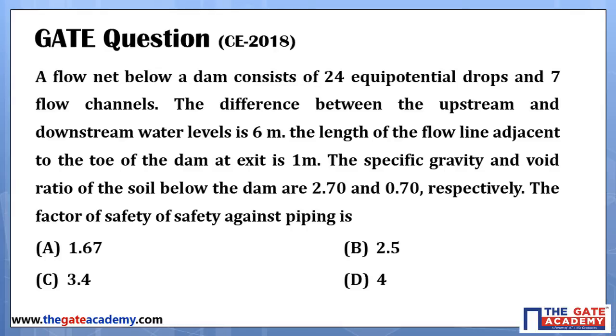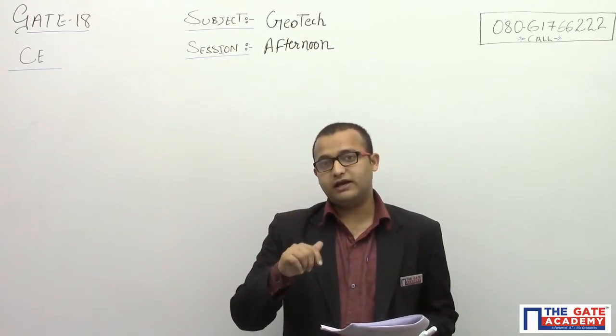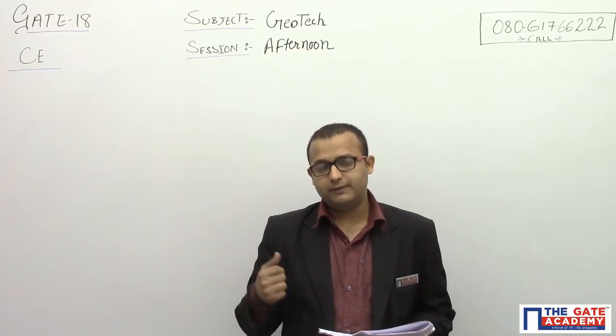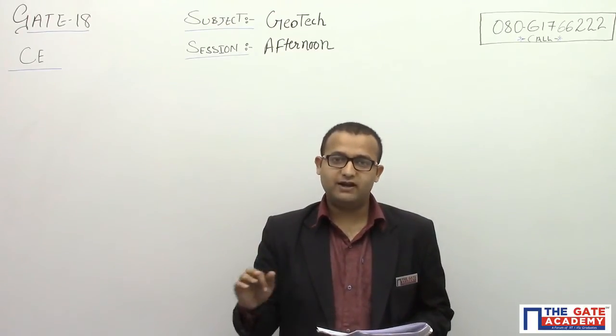The factor of safety against piping is what we need to find. We know the factor of safety against piping equals the critical hydraulic gradient divided by the actual hydraulic gradient. Critical hydraulic gradient I know how to calculate: it equals G minus 1 divided by 1 plus E.